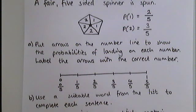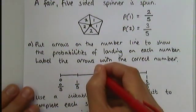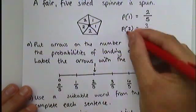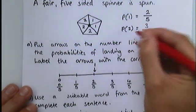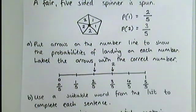Let's have a look where we're going to put our arrows. The first arrow, for number one, needs to go at two fifths, there. And the second arrow, for getting the number two, needs to go at three fifths. So I label it like that.